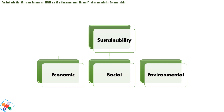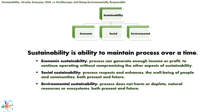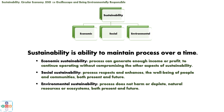Sustainability can be roughly divided into three categories: economic, social, and environmental. Economic sustainability means that a process can generate enough income or profit to continue operating without compromising the other aspects. Social sustainability means that a process respects and enhances the well-being of people and communities, both present and future. Environmental sustainability means that a process does not harm or deplete natural resources or ecosystems. Put in simple terms, sustainable economic activity aims at mitigating harmful impact, with the ultimate goal to enrich and improve all aspects of human society — whether economical, social, or environmental.